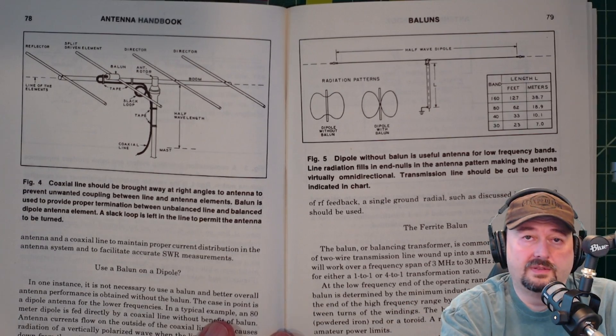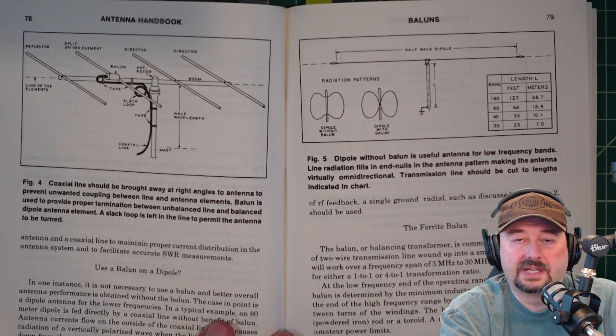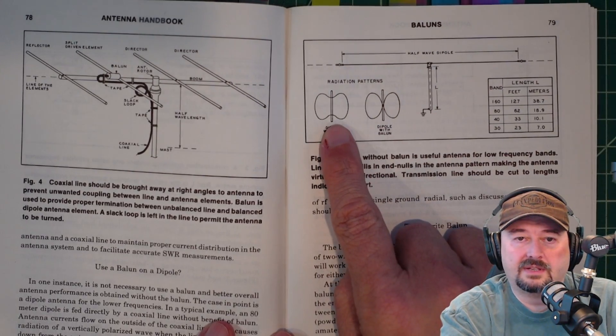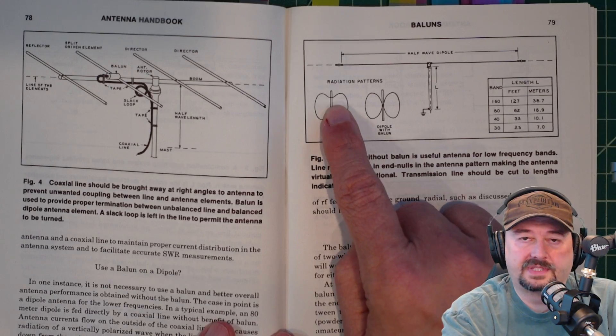So what William Orr is saying here is that if your antenna is mounted high enough at the correct height, and you do want to use the shield of your coaxial cable as part of your antenna system, don't use the balun, and it removes these nulls and adds gain in these north-south directions.